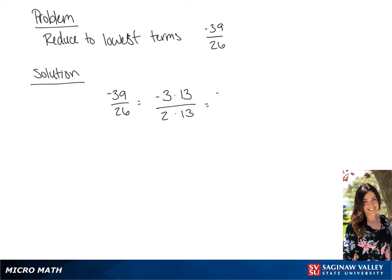So we have negative 3 over 2 times 13 over 13, which we know is equal to 1. So we get a final answer of negative 3 over 2.